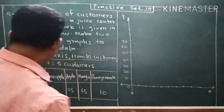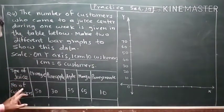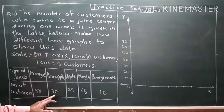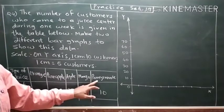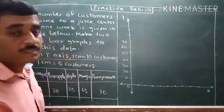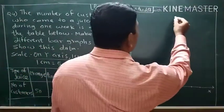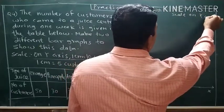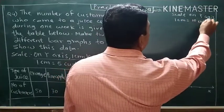On the x-axis, we will show the type of juice. For orange, the number of customers is fifty. For pineapple, thirty. For apple, twenty-five. For mango, sixty-five. For pomegranate, ten customers are there at the juice center. Now we will write: scale on y-axis, one centimeter is equal to ten customers.